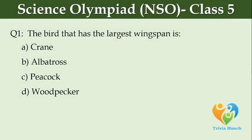The bird that has the largest wingspan is dash. Option A: crane, Option B: albatross, Option C: peacock, Option D: woodpecker.